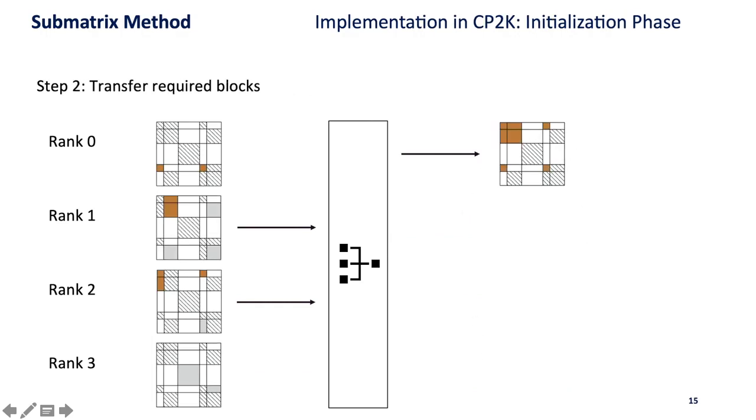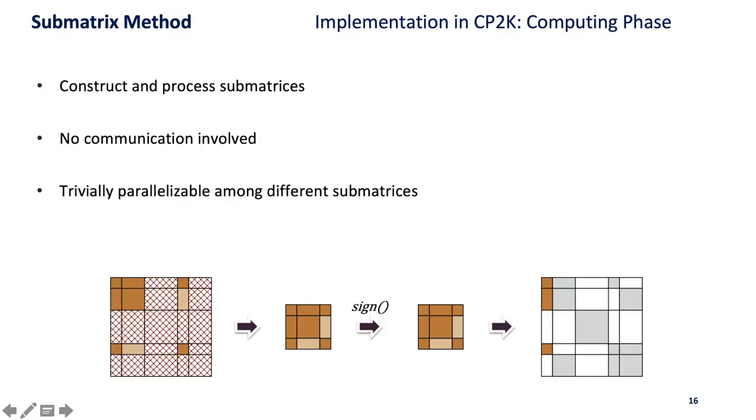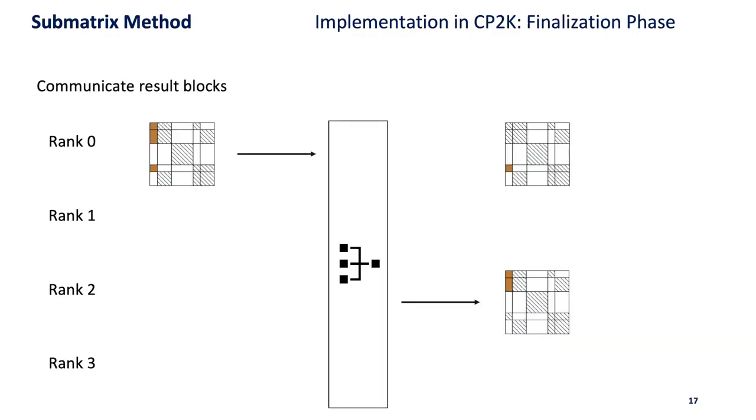Then there is the main computing phase where in this case rank zero can construct its first submatrix, process it, and generate the first result column. In the end we need a finalization phase where we communicate back the result blocks to the ranks that are supposed to have them according to the DBCSR format.